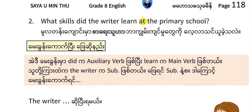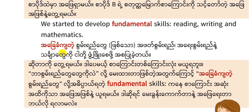What skills did the writer learn at the primary school? The writer learned fundamental skills: reading, writing, and mathematics — these are the fundamental skills.